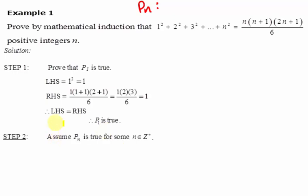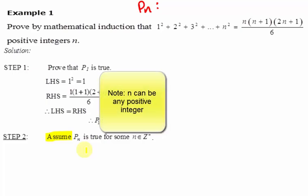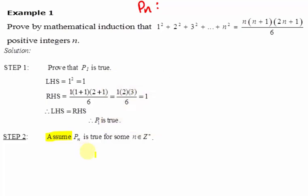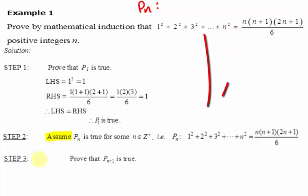For step two, we assume Pn is true. Since we let Pn be this expression, we can just copy down this expression for Pn.